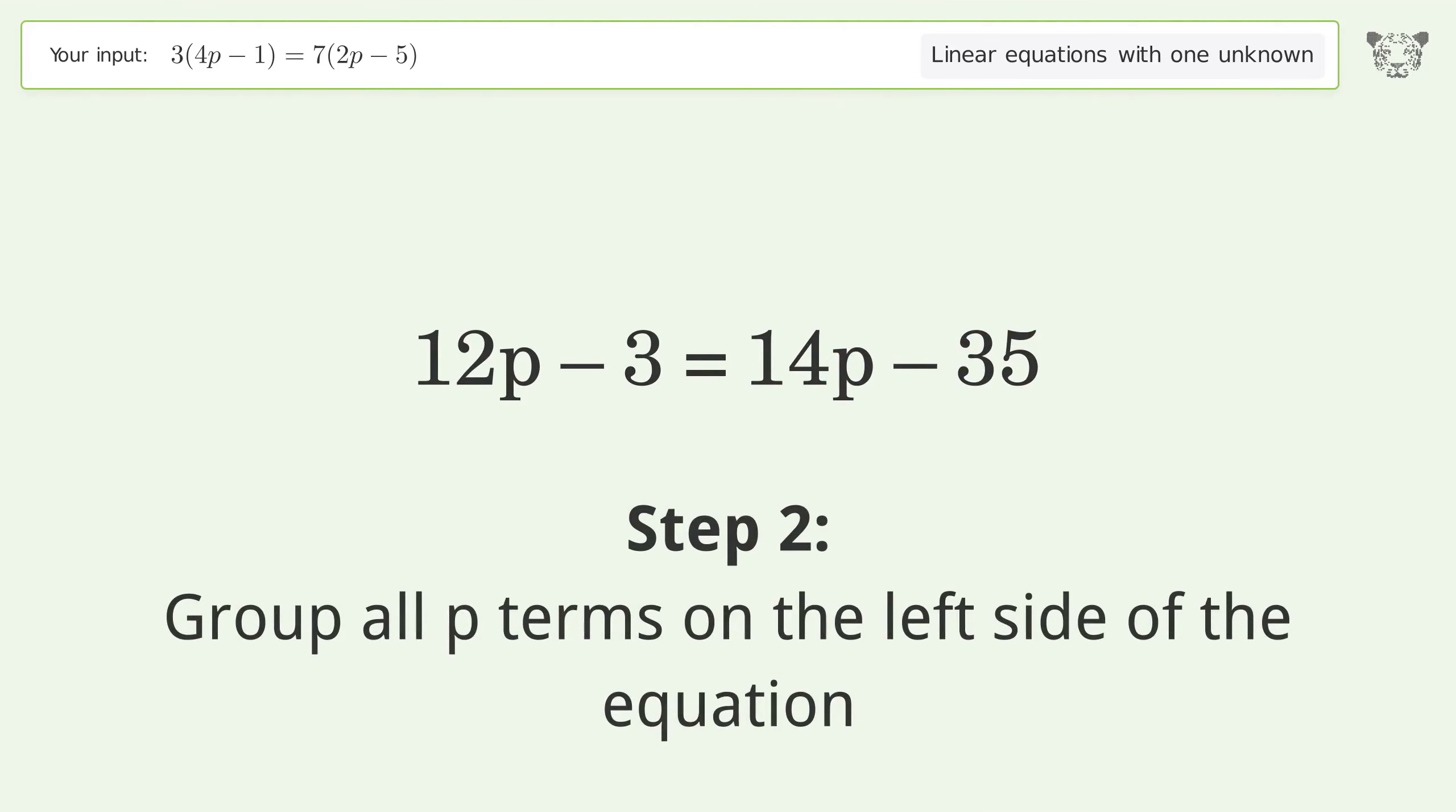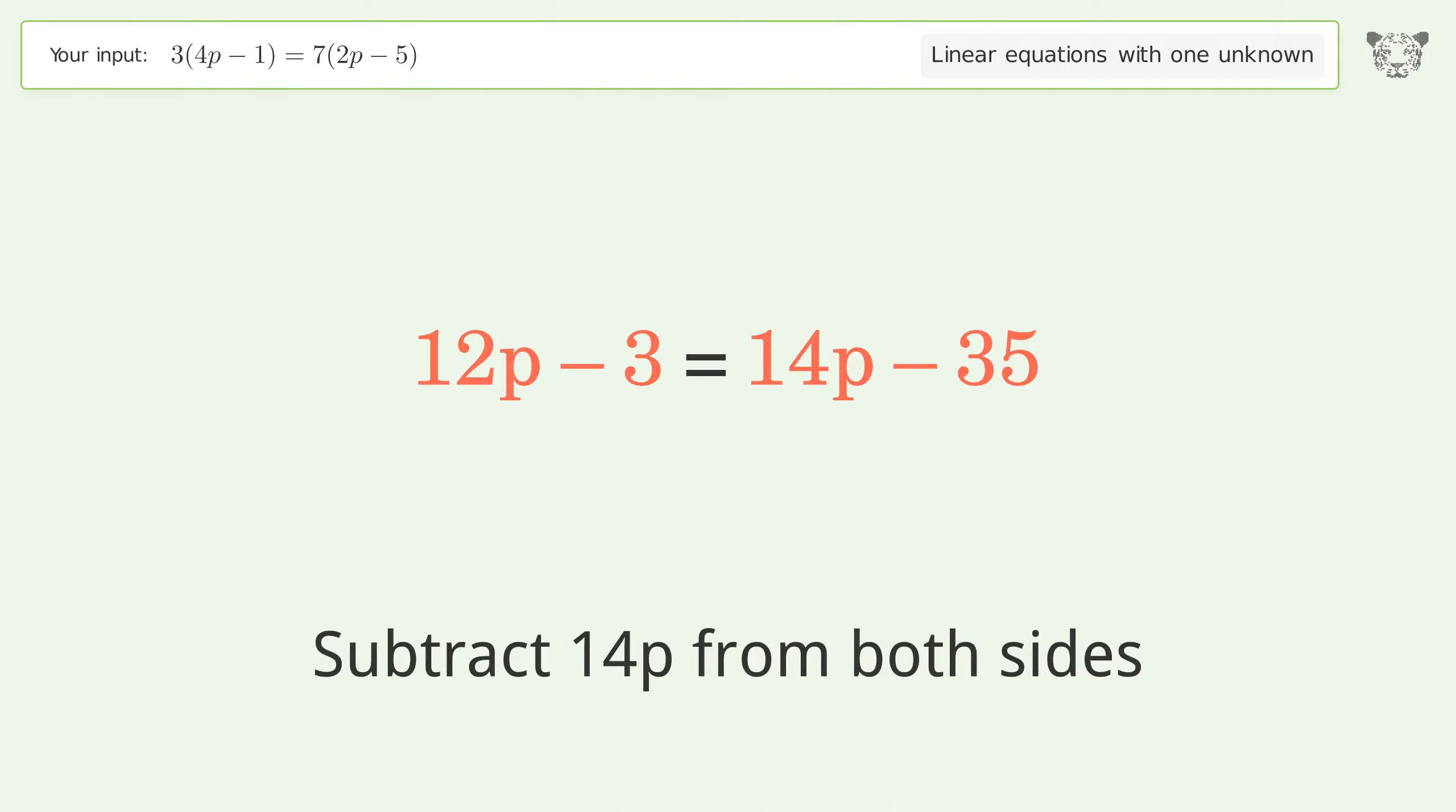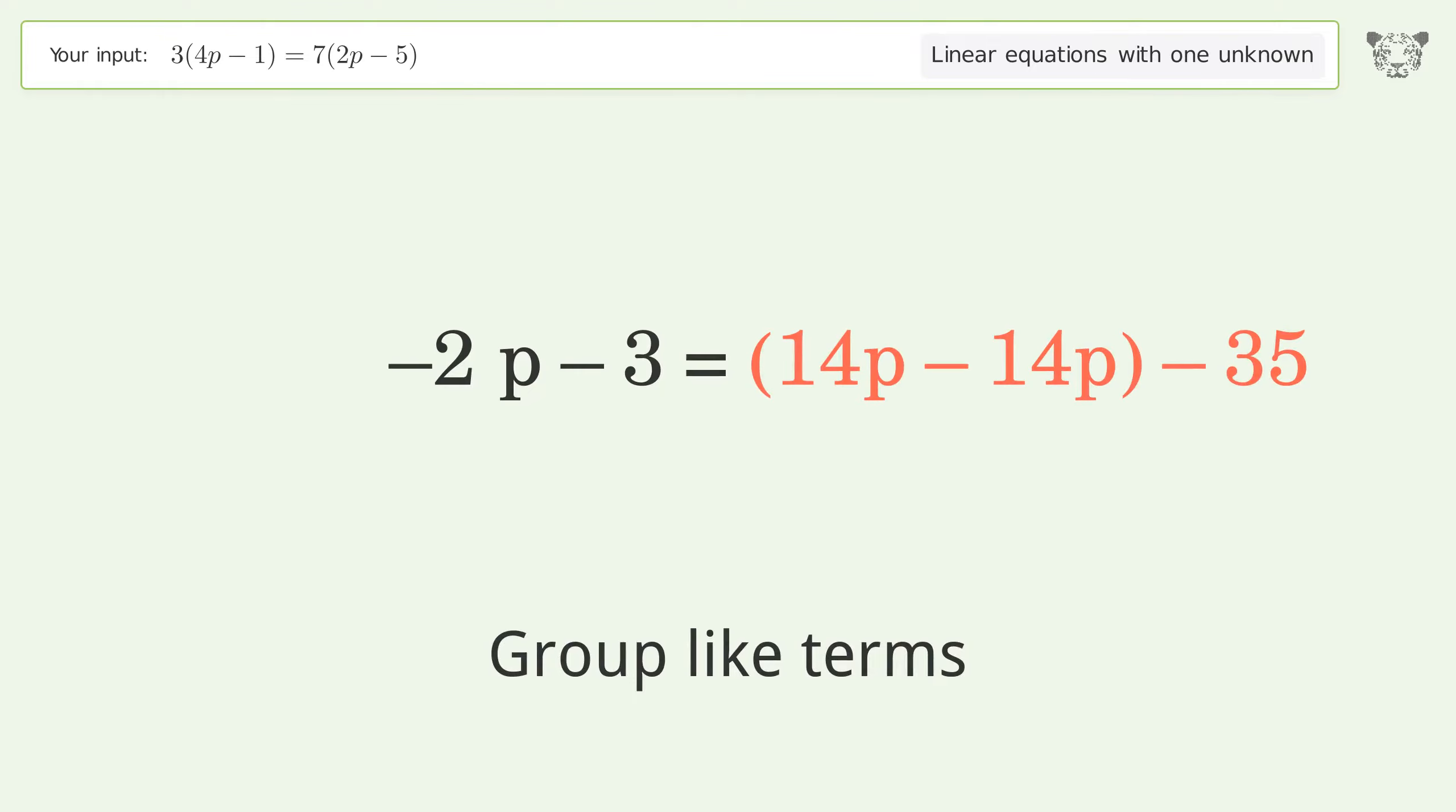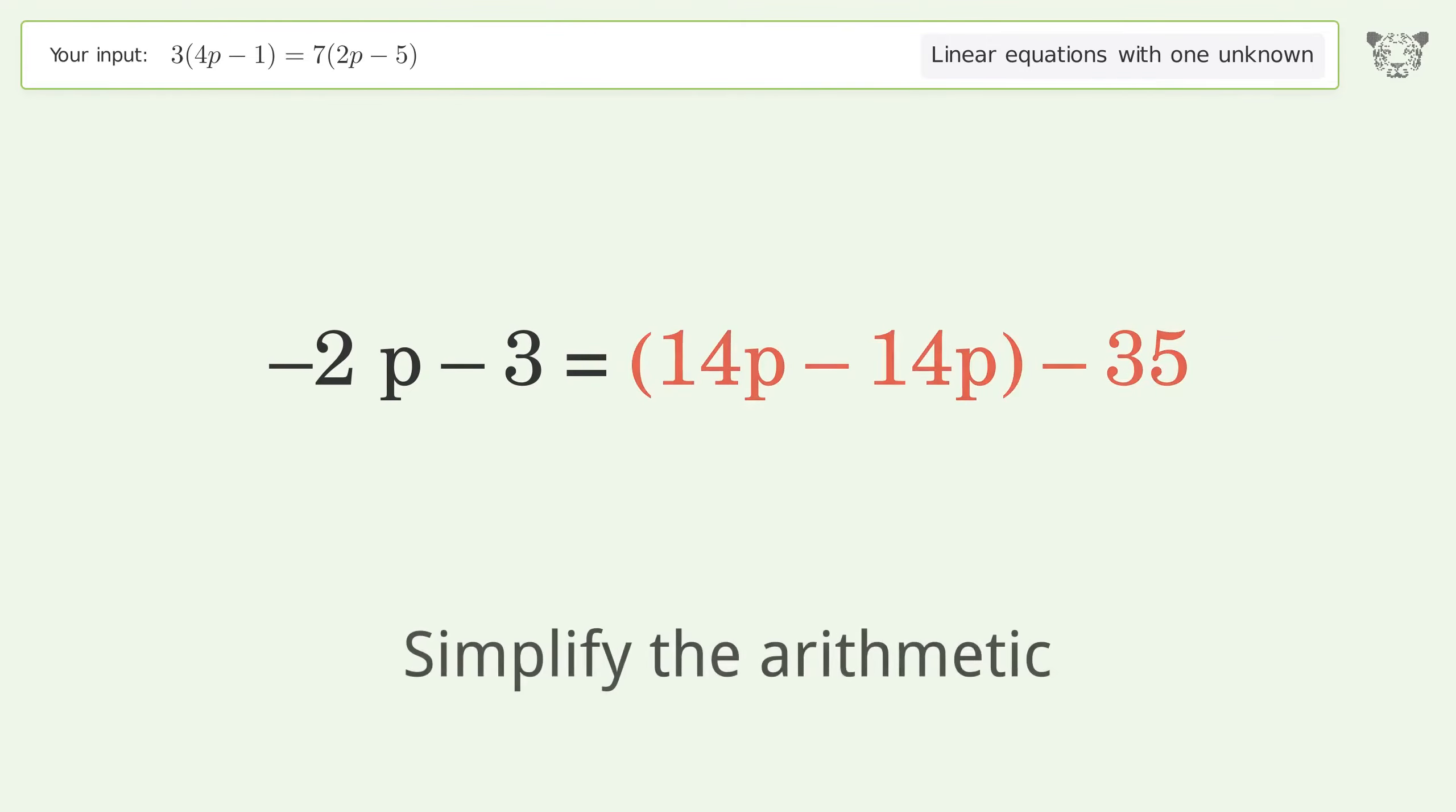Group all p terms on the left side of the equation by subtracting 14p from both sides. Group like terms and simplify the arithmetic.